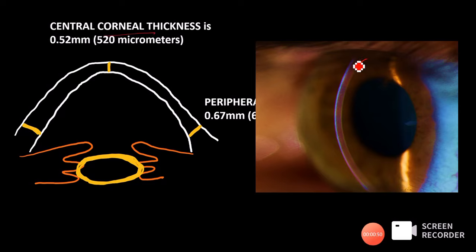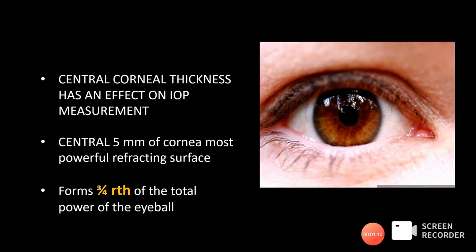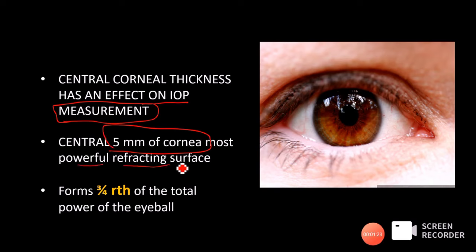In the slit image you can see that the peripheral cornea is thicker — about 670 microns — compared to the central corneal thickness of about 520 microns on average. The central corneal thickness is very important because it has an important effect on IOP measurements. The central 5 mm of the cornea is the most powerful refracting surface, and nearly three-fourths of the total power of the eyeball comes from the cornea.